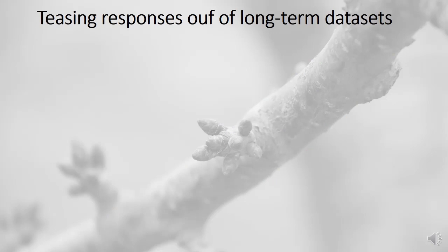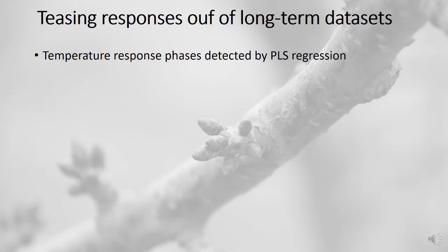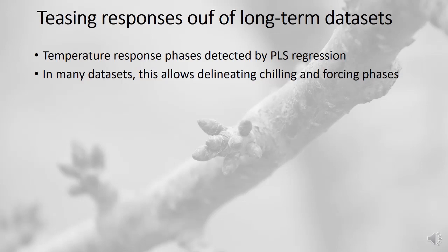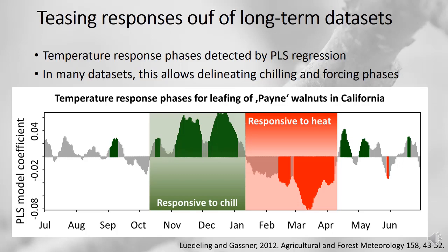The first strategy is to try and tease temperature responses out of long-term data sets. The tool we use is partial least squares regression, or projection to latent structures regression. In many data sets, this has allowed us to delineate chilling and forcing phases, making use of long-term records of bloom dates or leaf-out dates of trees collected in a particular location.